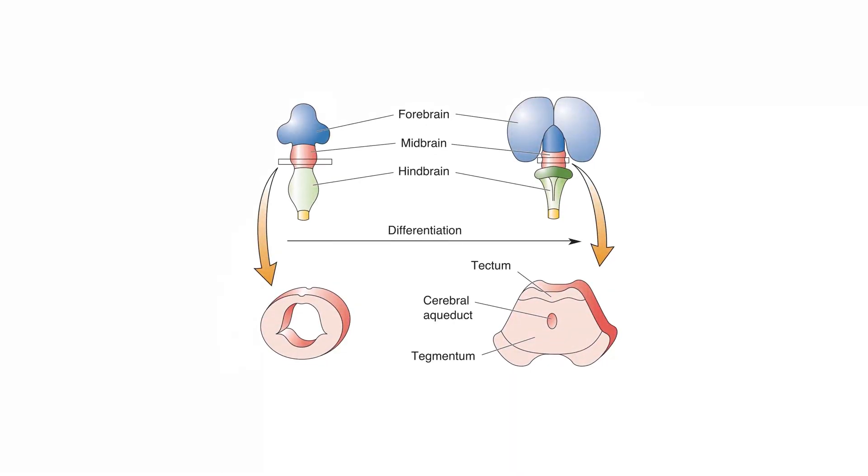And finally, it's time to finish the development of the primary vesicle to secondary by differentiation of the midbrain. The dorsal surface of the mesencephalic vesicle becomes a structure called the tectum. The floor of the midbrain becomes the tegmentum. The CSF-filled space in between constricts into a narrow channel called the cerebral aqueduct.